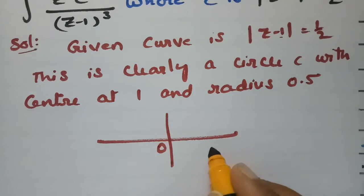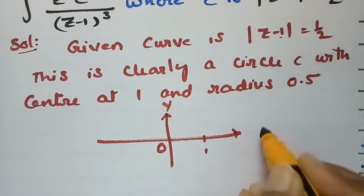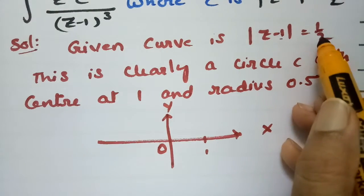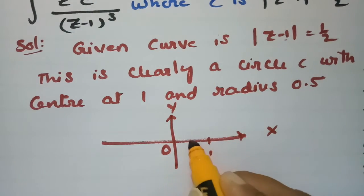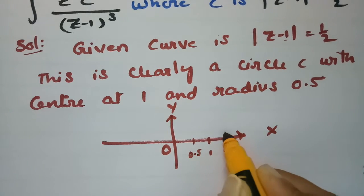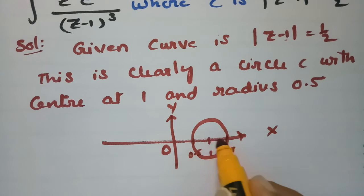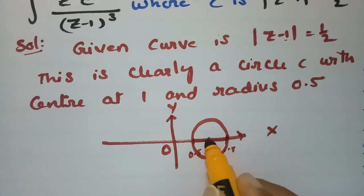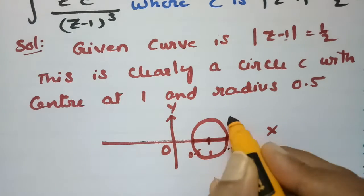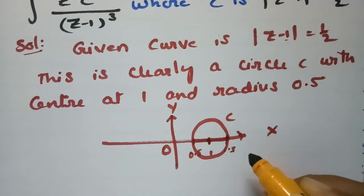This is the origin point, this is 1, and here we have the y-axis and the x-axis. So half is the radius — the circle runs from 0.5 to 1.5 — with center 1 and radius 0.5 as the circle c.